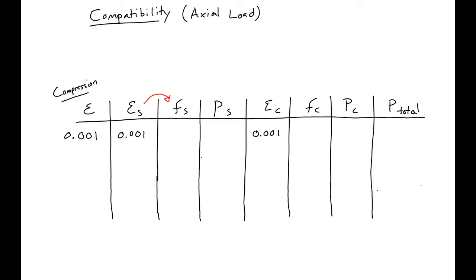We take our steel strain times our steel modulus, as long as we're under yield. If we do that here, we'll get a steel stress of 29 ksi.